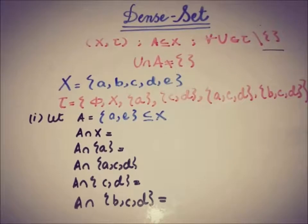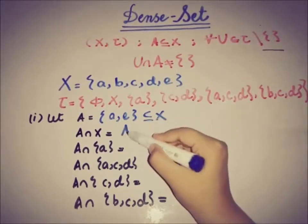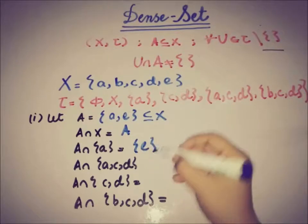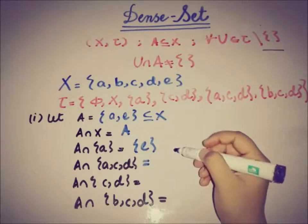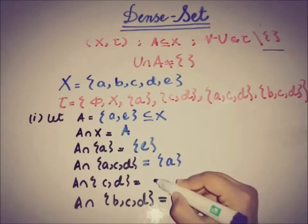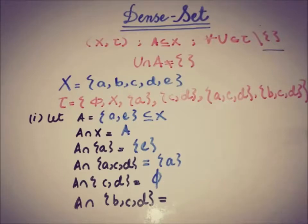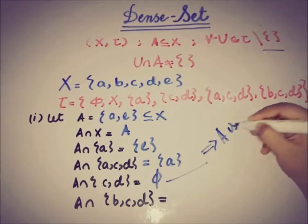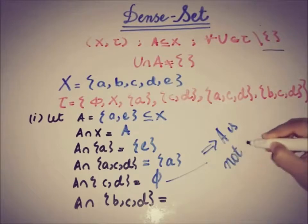So A intersection with X is equal to A. A intersection with A is equal to A. A intersection with {a,c,d} is equal to A, and A intersection with {c,d} is equal to empty set—no element is common in A and {c,d}. As this is empty, this implies that A, which is {a,e}, is not dense.